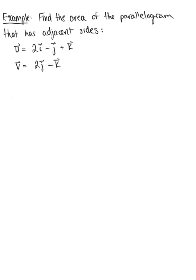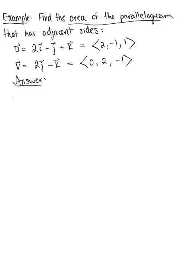Find the area of the parallelogram that has adjacent sides defined by vector u and vector v. Rewriting in component form, vector u has components 2, -1, 1, and vector v has components 0, 2, -1. We are looking for the area of this parallelogram.